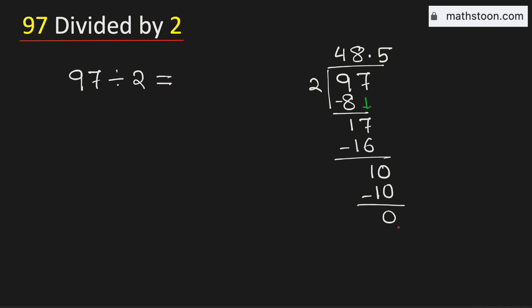As we have obtained the number 0 and there is no number to bring down here, so we will stop. Therefore, 97 divided by 2 is equal to 48.5, and this is our final answer.